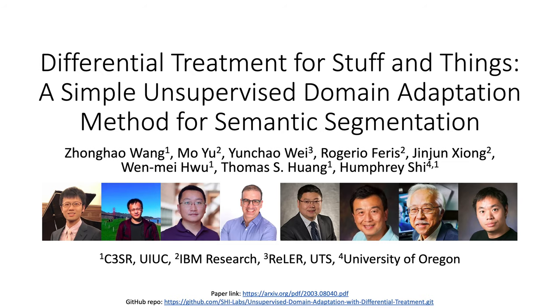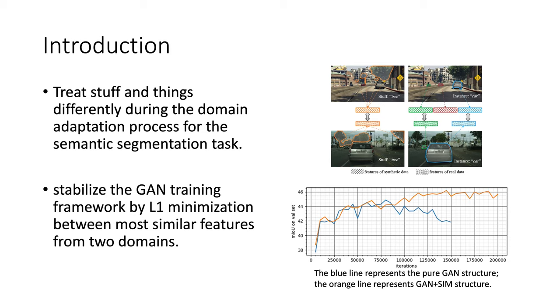We tackle unsupervised domain adaptation for semantic segmentation in this work. Our main contributions include, first, we improve the semantic level alignment with different strategies for stuff regions and for things. Second, we stabilize the GAN training framework for adaptation.